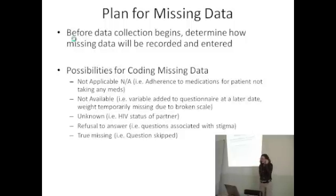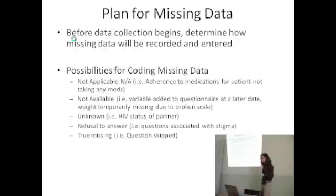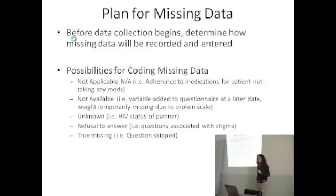Another category would be 'not available.' If a variable is added to a questionnaire after the first revision, then you might want to code those records that were collected prior to when that variable was added as 'not available' instead of just leaving it as missing — you want to say it's missing because it was not on the form at the time. Another example is when machinery breaks: if the clinic is without a scale for a week, you may want a special category saying the data were not available, as opposed to just leaving a blank for the weight.